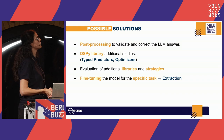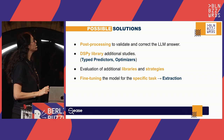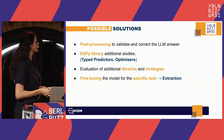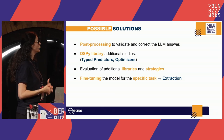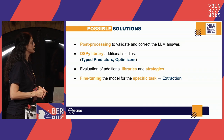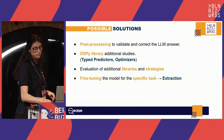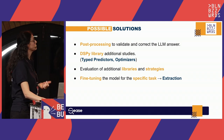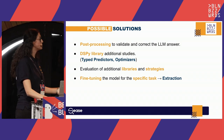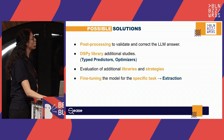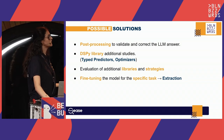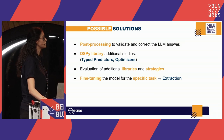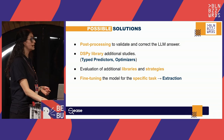Possible solutions for formal limitations include post-processing to validate and correct the model's answer. We would also like to study the DSPy library more in-depth — specifically the type predictor and optimizer features related to type constraints and prompt optimization. Additionally, evaluating additional libraries and strategies, and fine-tuning the model for the specific task of information extraction.